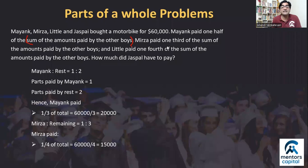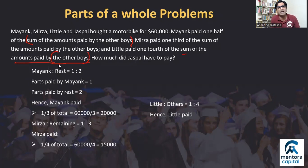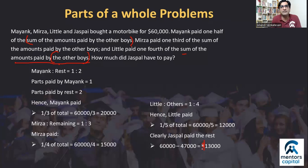Little paid one fourth of the sum paid by the other boys — ratio of Little to rest is 1:4, so Little paid 1/5 × 60,000 = 12,000 rupees. Now three members' shares are known: Mayank = 20,000, Mirza = 15,000, Little = 12,000. Subtracting from 60,000: 60,000 − 20,000 − 15,000 − 12,000 = 13,000 rupees, which is what Just Paul pays.